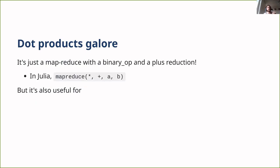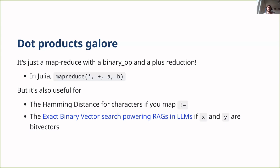So if you've never heard of dot products, they're basically just a binary operation on two vectors and then a reduction. In Julia, I would write that code in a single line using map-reduce or just use the Unicode character. But if you sort of open your mind to the algorithm, you can abstract it away and think about it on vectors of characters. If you map on equals, that's the Hamming distance. And if you have bit vectors, then the new rage is these RAGs for LLMs, and they're using something called exact binary vector search. Dot products, you can just keep on finding them everywhere. I think that's fun.